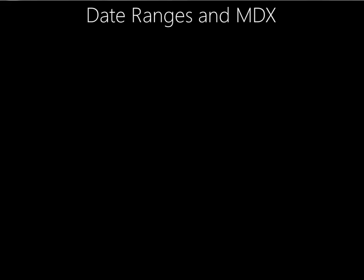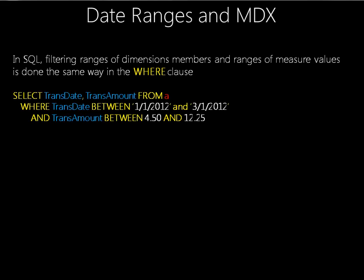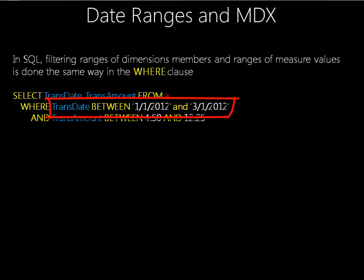One thing that's very different between SQL and MDX is how we can handle queries that have date ranges. In SQL, handling date ranges is relatively easy, and the query syntax is no different between selecting ranges of dates from a dimension versus selecting some range of values from a measure. We use a WHERE clause where, for example, the trans amount is between 4.15 and 12.25. To handle date ranges, we also include that in the WHERE clause, and the syntax is identical. The SQL engine treats dimensions and measures pretty much the same when doing this kind of query.